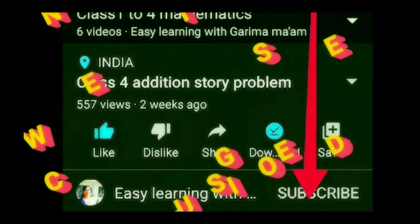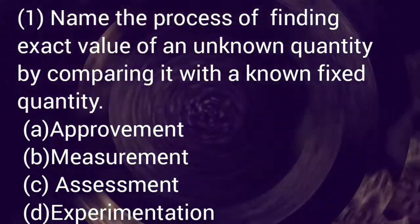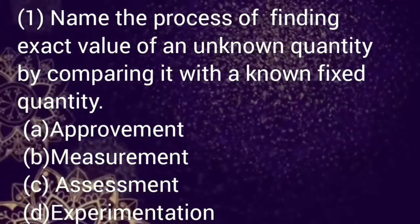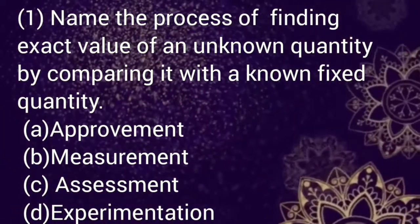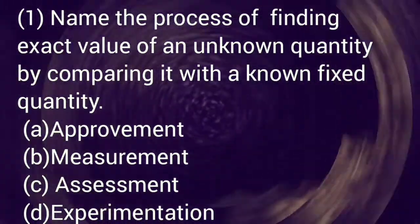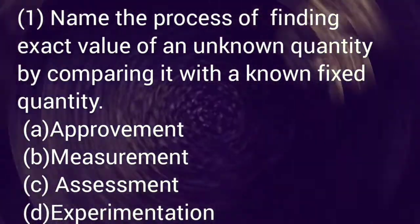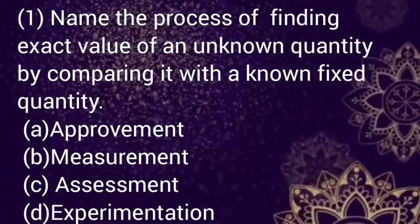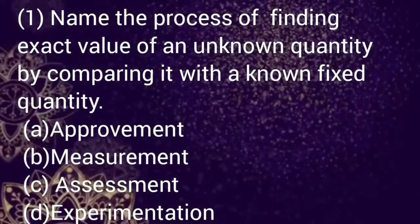So let's start. Question number one: Name the process of finding exact value of an unknown quantity by comparing it with the known fixed quantity. Option a: improvement, b: measurement, c: assessment, d: experimentation. Select your answer. Correct option is option number b, measurement.